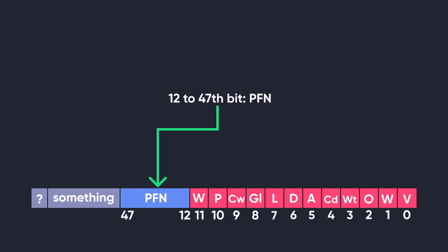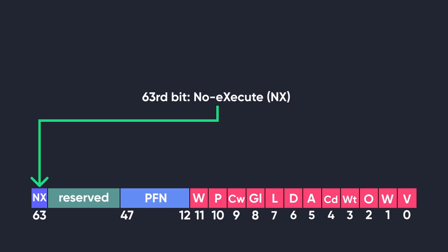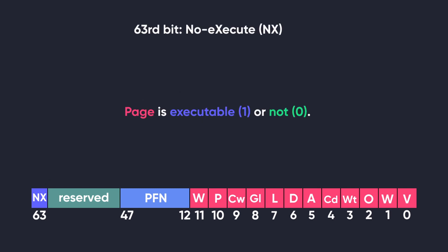The bits from 12 to 47 store the page frame number, which we have already discussed. The bits from 48 to 62 are reserved, meaning their usage is undocumented by Windows and used for some internal mechanisms. The last and 63rd bit is the no-execute bit, or NX bit. This bit tells whether the content of a page can be treated as executable code. If this bit is set to 1, then the page is not able to execute.